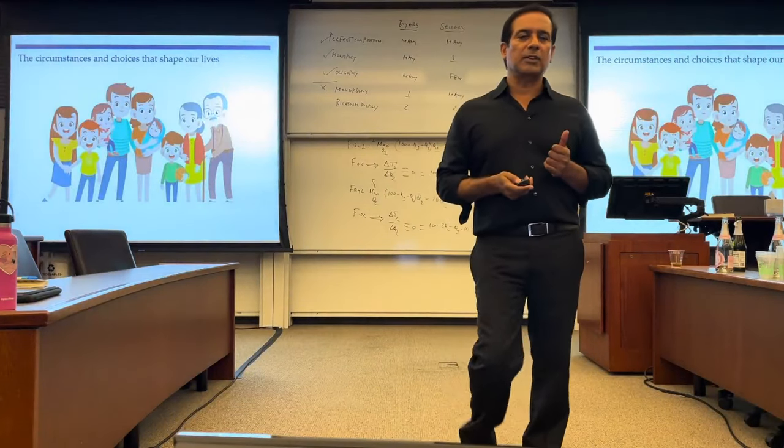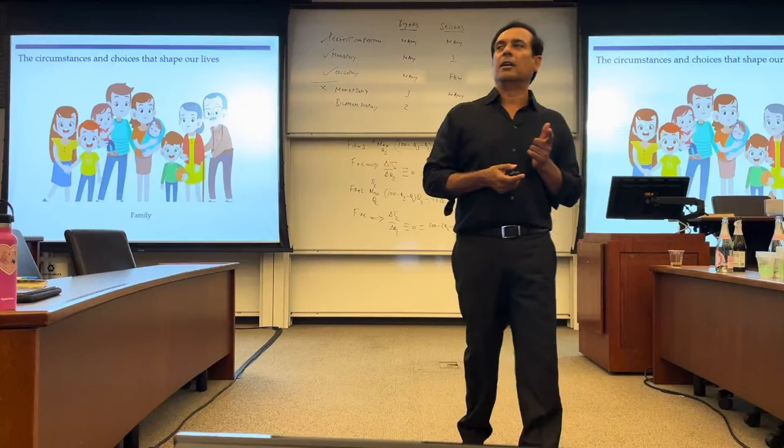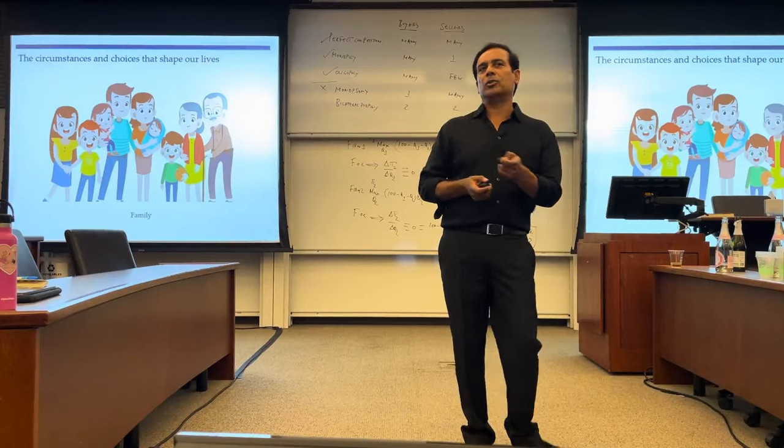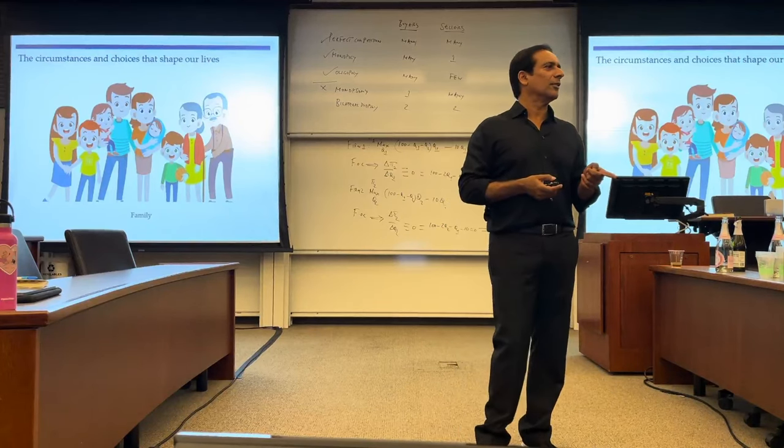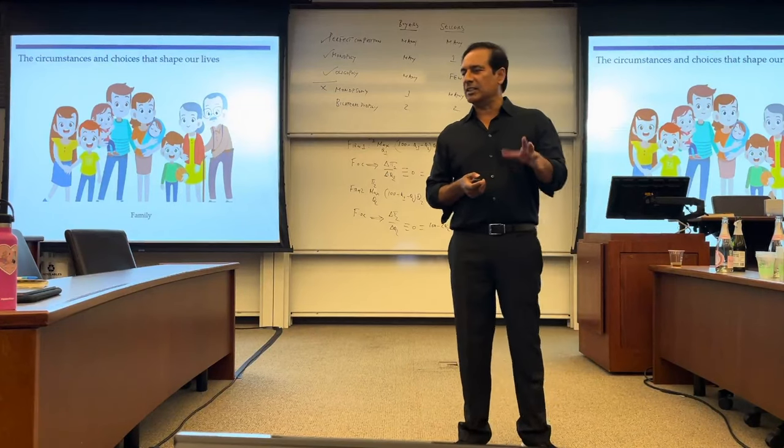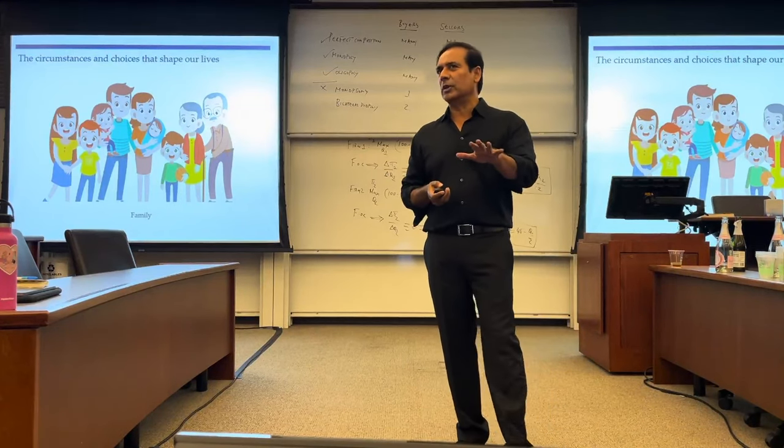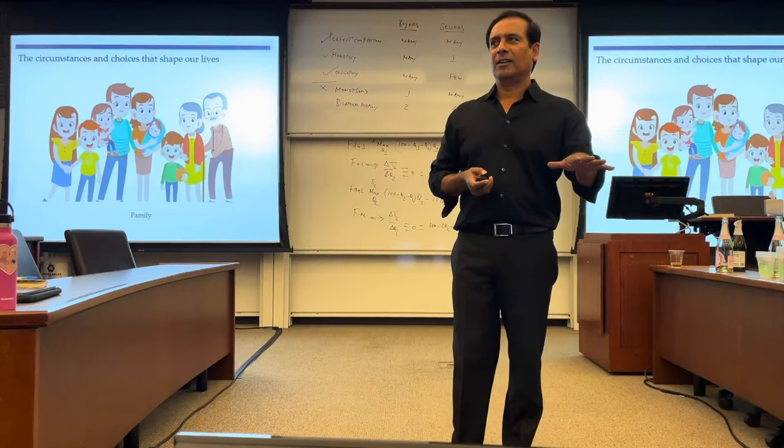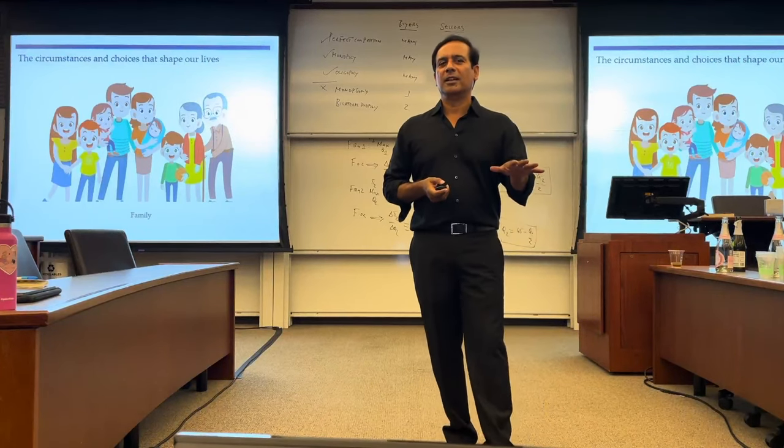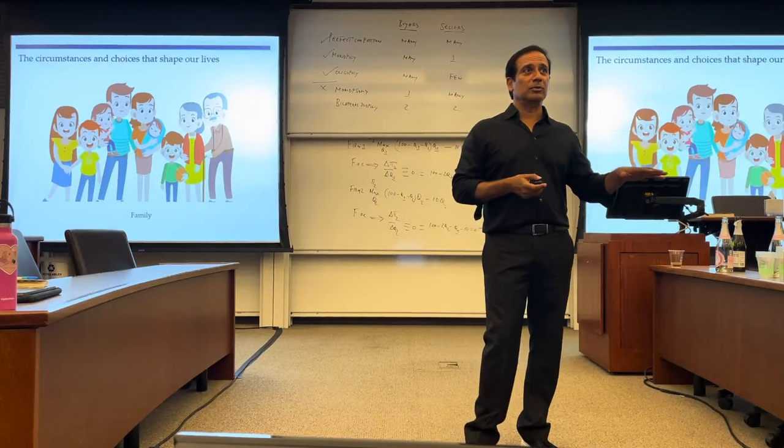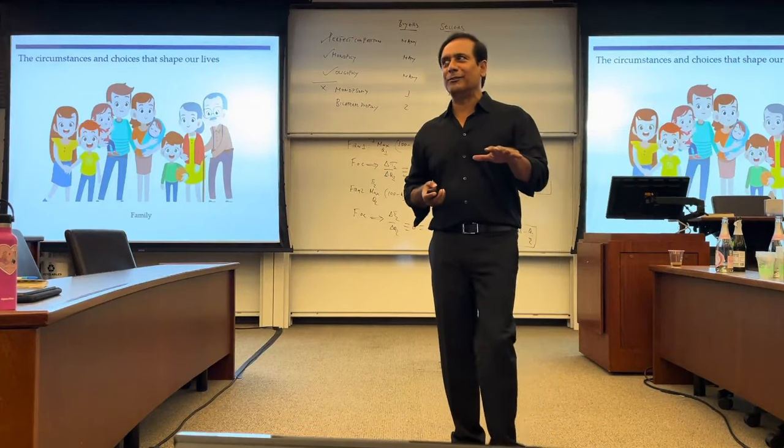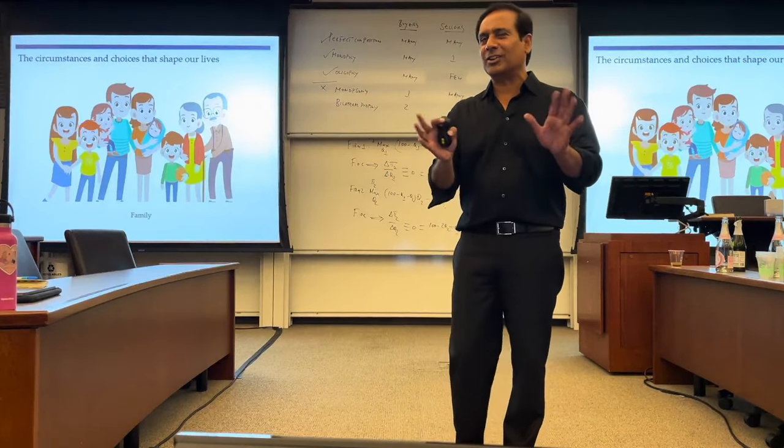The other circumstances and choices that shape our lives: family. Now this is mostly given to us. Family is a safety net but it's also a double-edged sword. In many parts of the world the family is there for you. But the family also interferes in your life. That's the trade-off we make.